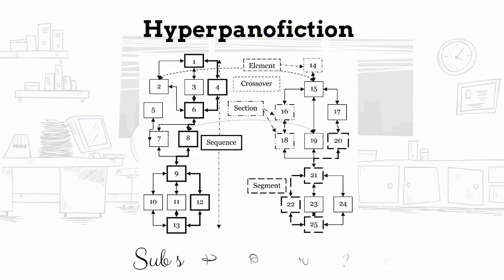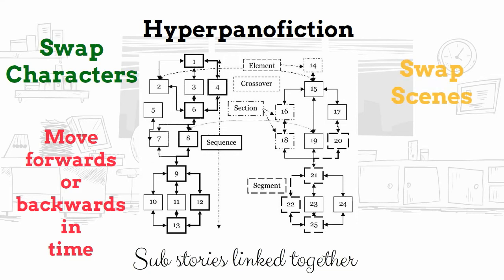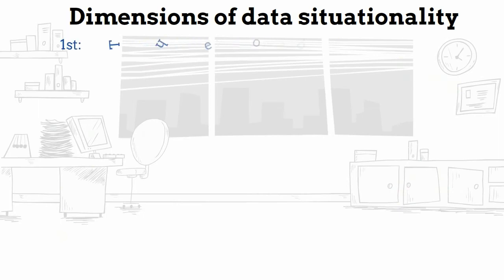Hyper pano fiction is a series of short stories linked together to make bigger stories. These linked sub-stories, characters, and scenes are like choose-your-adventure genres. You can follow any link, swap any character, or move in any direction in time.